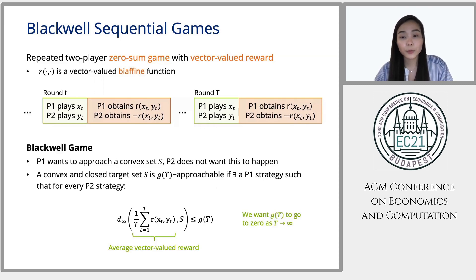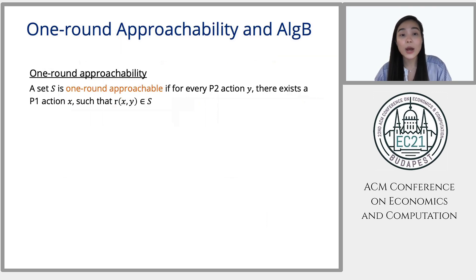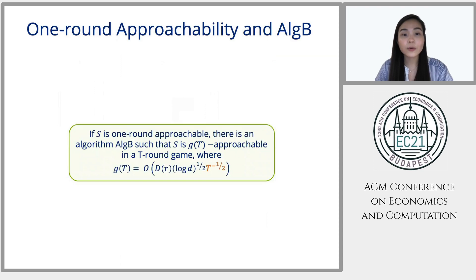Now, there's another notion of approachability which we call one-round approachability. Whereas that s is one-round approachable if for every action that player two plays, there exists an action that can be played by player one such that the reward vector is in s. Now, the approachability theorem says that for any one-round approachable set s, there is an algorithm of b such that s is also g of t approachable in a t-round game. Now, see that g of t here grows like t to the minus one-half.